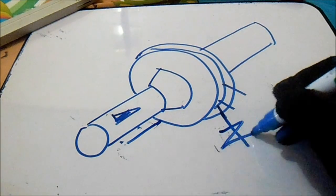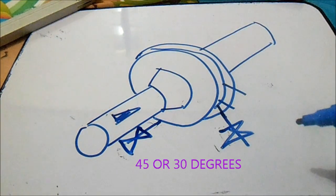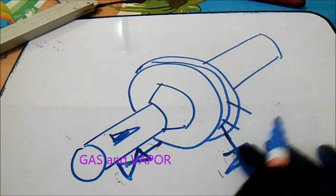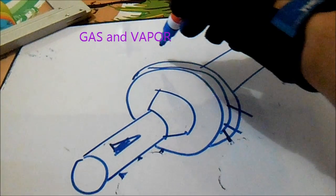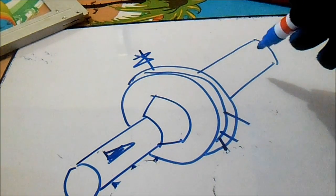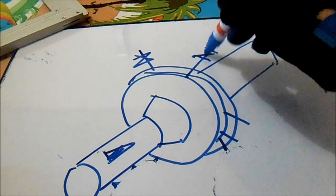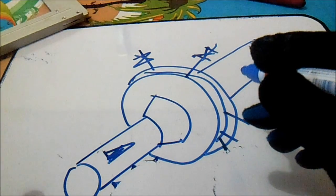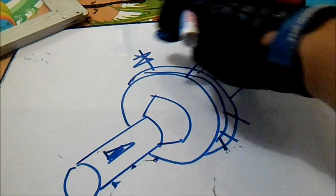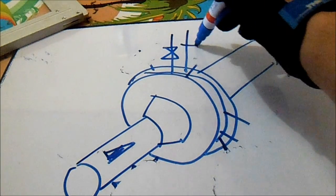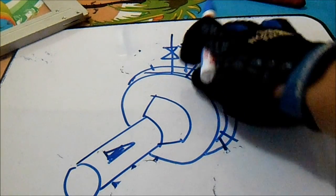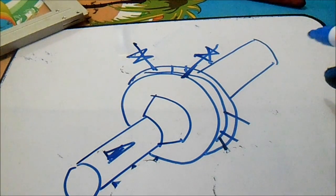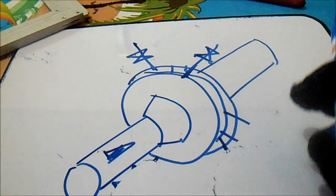The bulb is at 45 or 30 degrees. Now if the line is gas, our bulb is from the top. So this is for gas and vapor — this is the standard. We also have an alternative for that. The alternative is the bulb positioned like that, but the standard is 45 to 30 degrees.